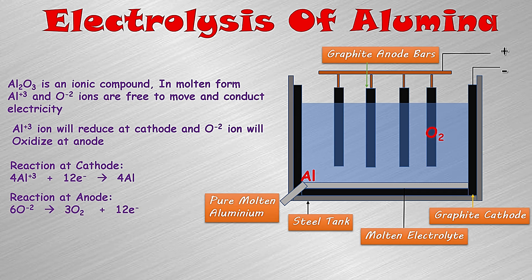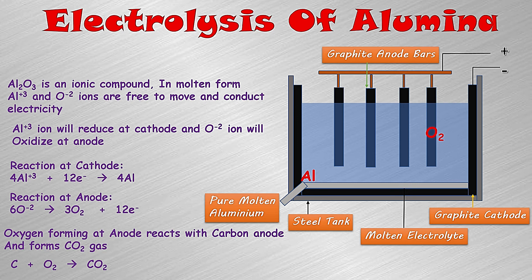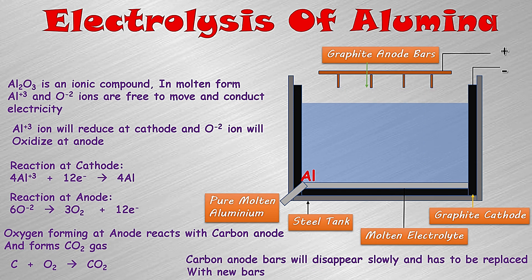Oxide ions move towards the anode, and at the anode they lose electrons. The negatively charged oxide ions convert into neutral oxygen gas, so at the anode oxygen gas is produced. This reaction is an oxidation reaction — oxide ions are oxidized to oxygen gas because this is a loss of electrons. This oxygen gas, which forms at the anode, then reacts with the carbon anodes. Since the anode bars are made up of graphite, which is a form of carbon, the oxygen reacts with the carbon and converts it into carbon dioxide, which evolves from the cell.